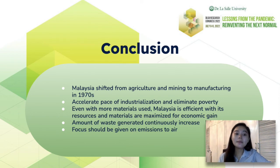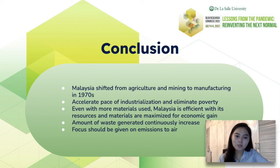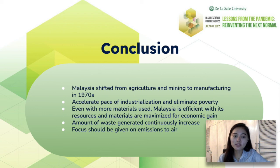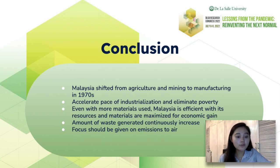In conclusion, Malaysia has shifted its economy from agriculture and mining to a manufacturing economy in the 1970s, to accelerate industrialization and achieve the goal of eliminating poverty as stipulated in the new economic policy. It was identified that Malaysia is more efficient in its resource use, where materials are maximized for economic gain, and an increase in domestic resources used for consumption is also evident. Although the country is more efficient in its resources, the amount of waste generated to the environment is continuously increasing. Better policies should be implemented for greener consumption of resources and production of goods. In terms of DPO, focus should be given on emissions to air, as current efforts have not seen a decrease in these outputs.